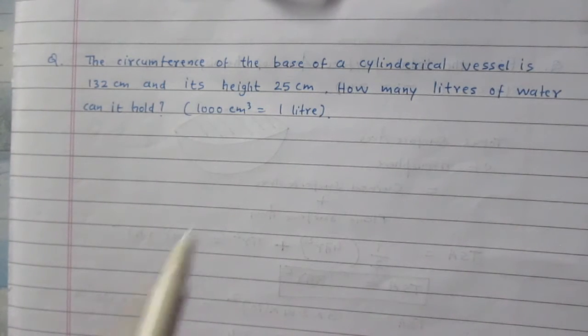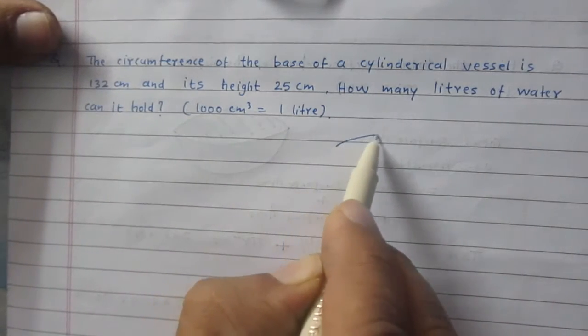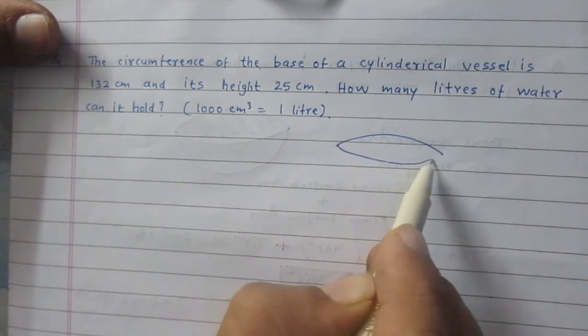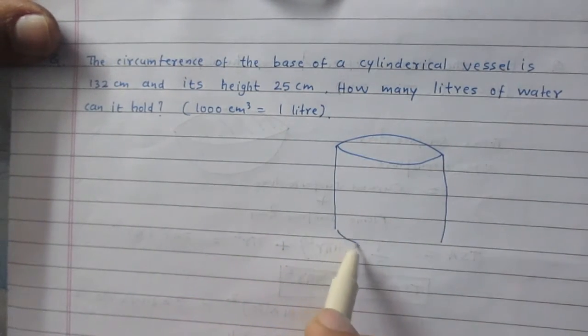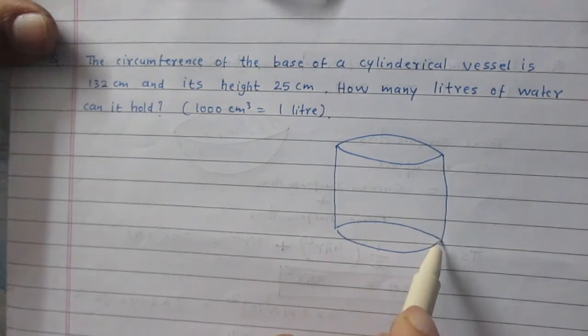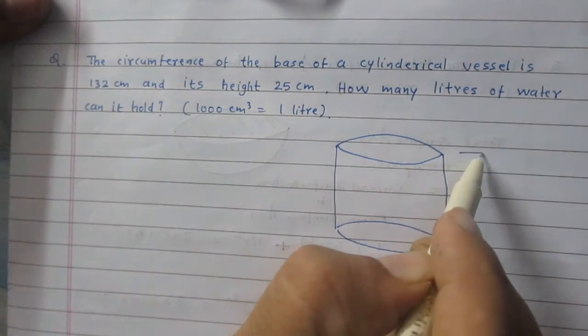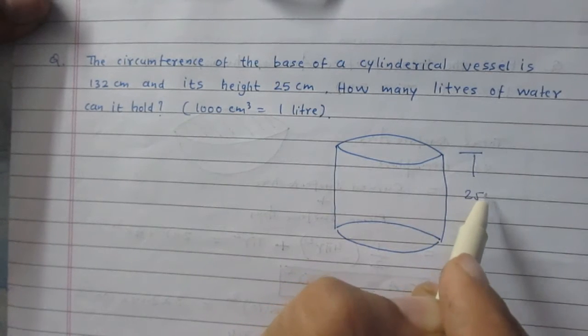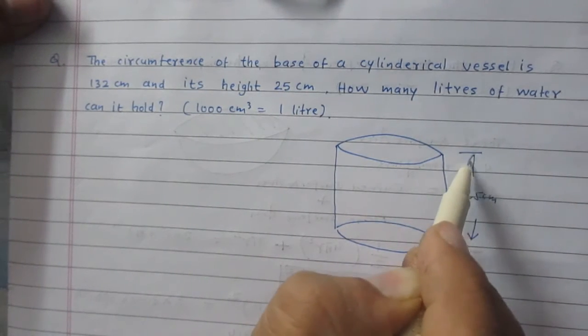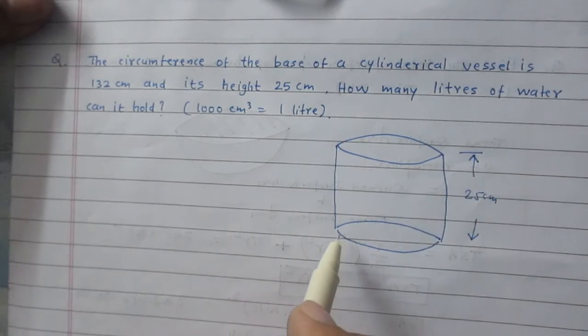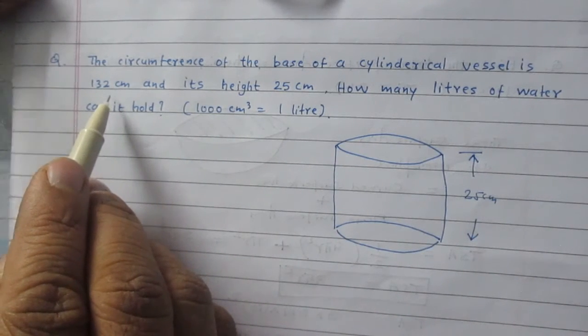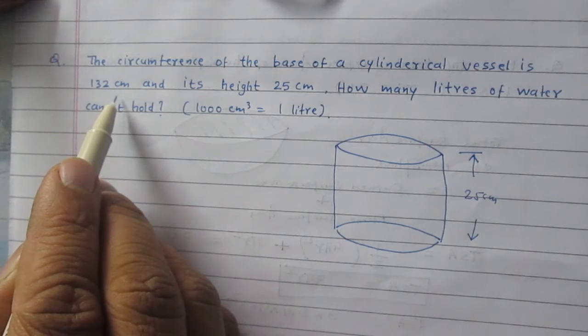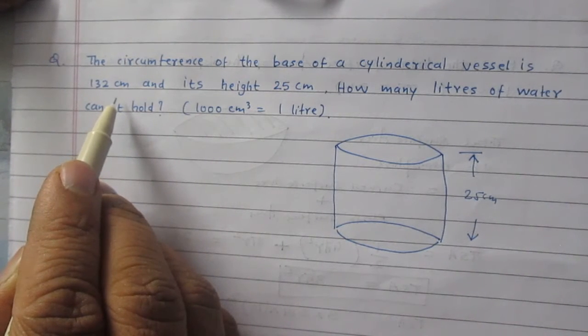In this question we are given a cylindrical vessel. This is a cylindrical vessel and its height is 25 cm. The circumference of the base of this cylindrical vessel is 132 cm, and we are supposed to find its volume in liters.